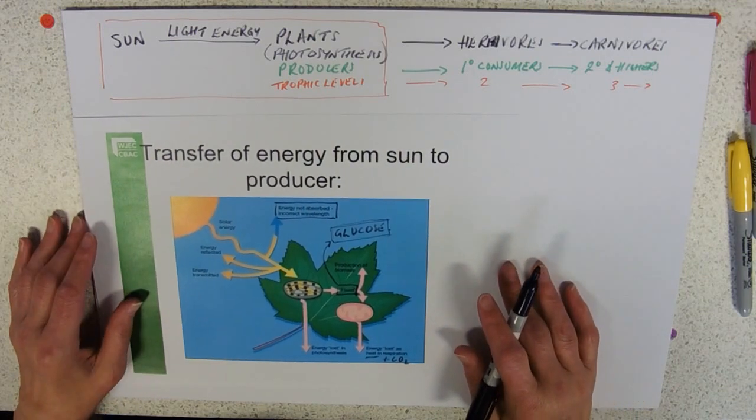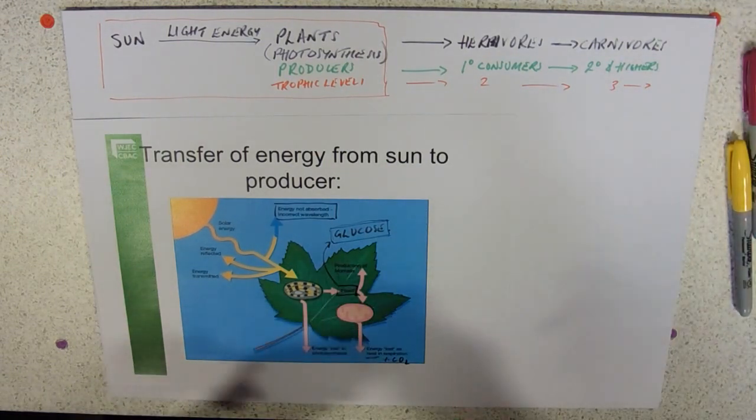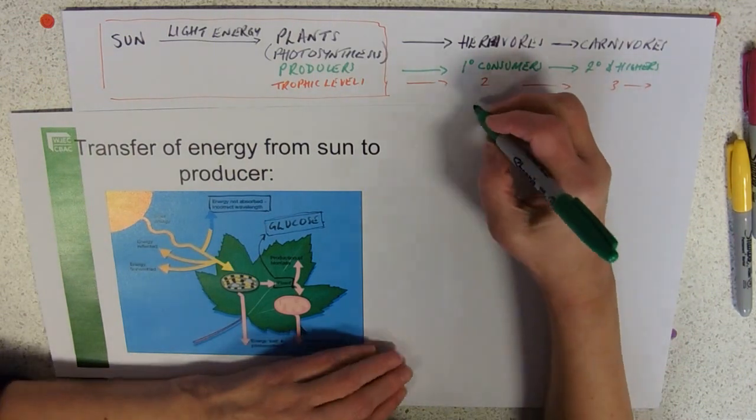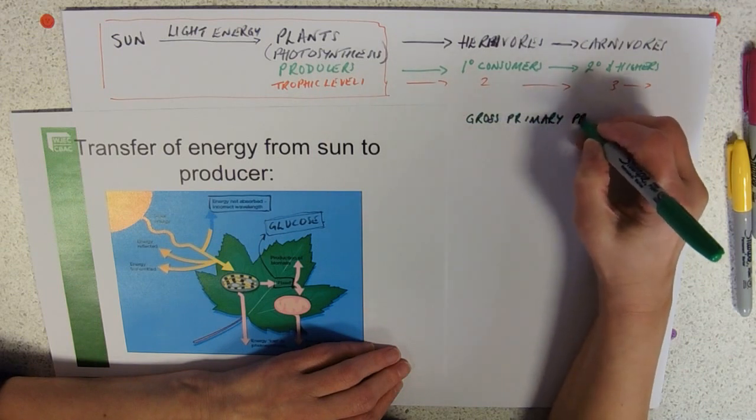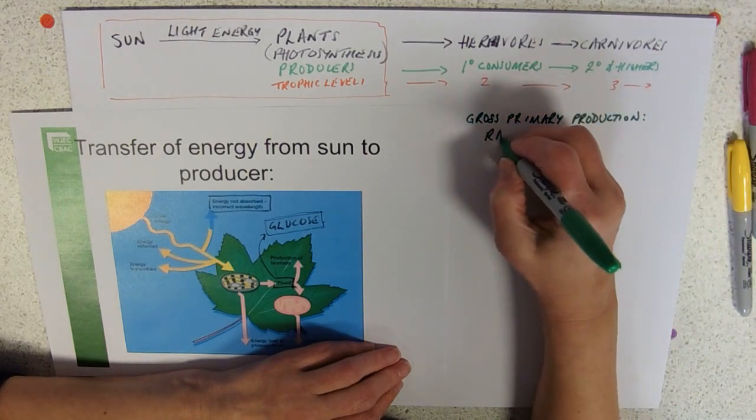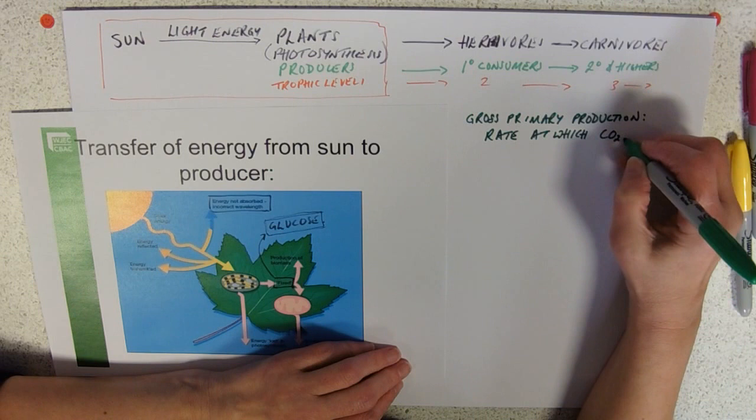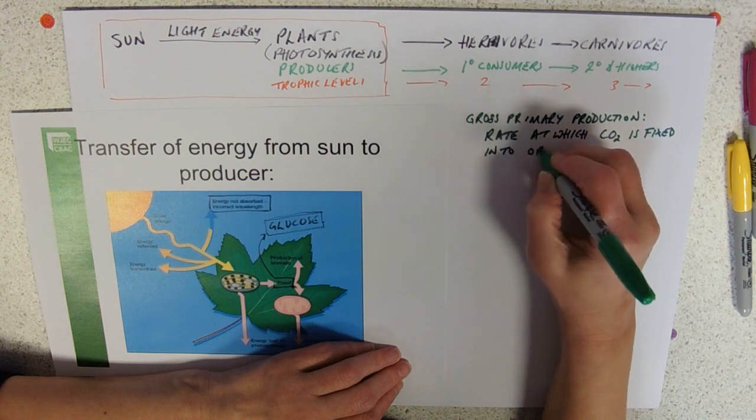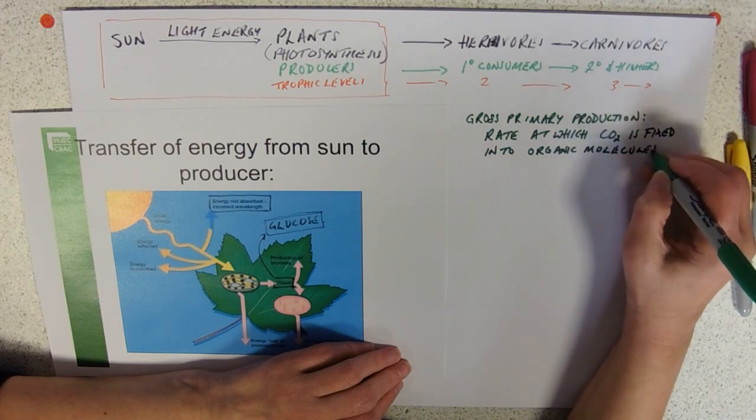We need to know two terms associated with that diagram. The first term is gross primary production. This represents the rate at which carbon dioxide is fixed into organic molecules.